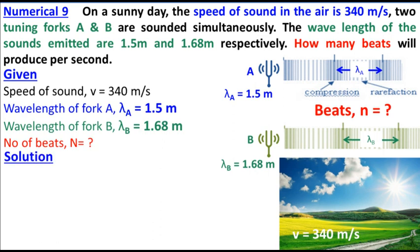How many beats can be known? It is the difference of frequency. We can find the frequency from the wave equation: V is equal to F lambda. We can find the frequency from both wavelengths.